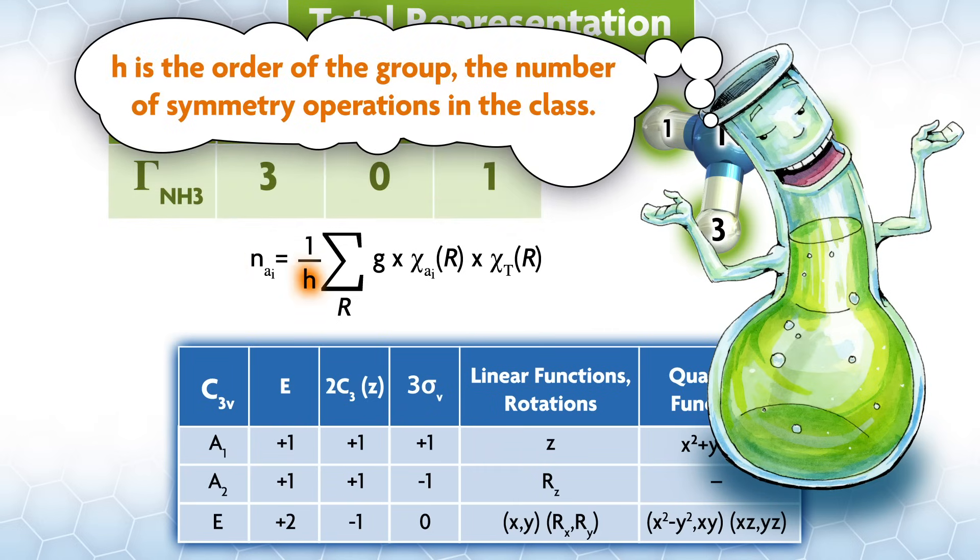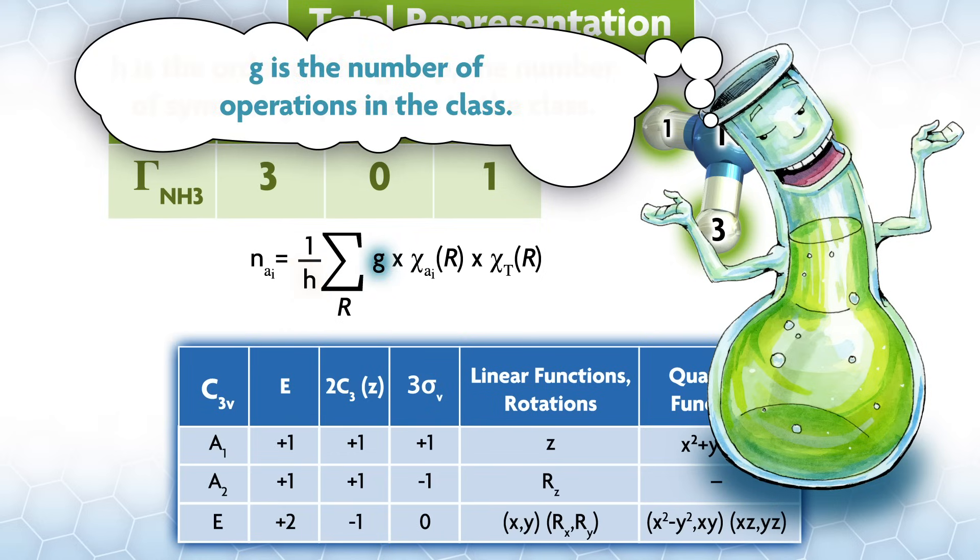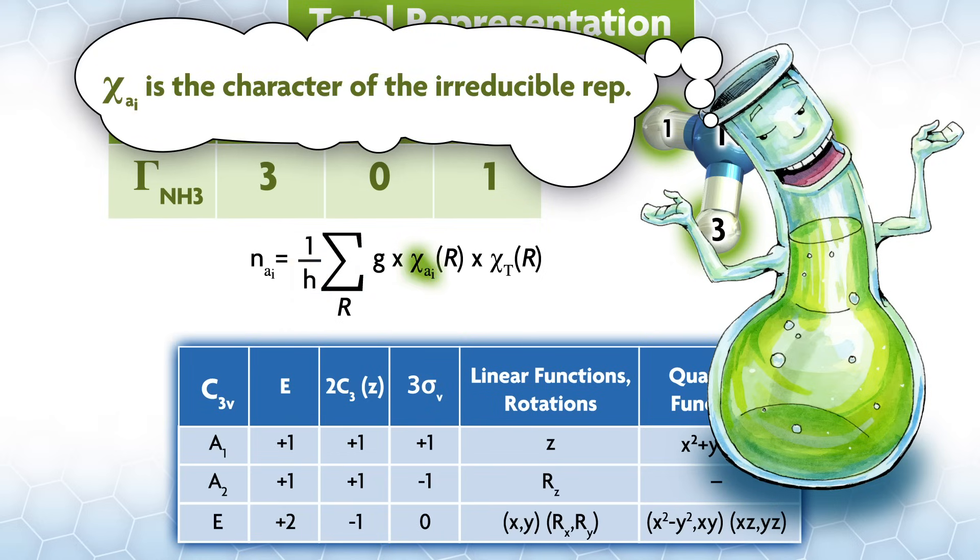The decomposition formula tells you how many times an irreducible rep, n sub a i, appears in your reducible rep. h is the order of the group, the number of symmetry operations in the class, g is the number of operations in the class, chi a i is the character of the irreducible rep, and chi t is the character in your total representation. The sum runs over all the classes, big R. It looks harder to use than it is, which I can prove by doing our example.